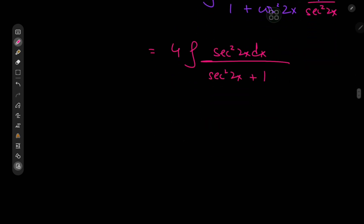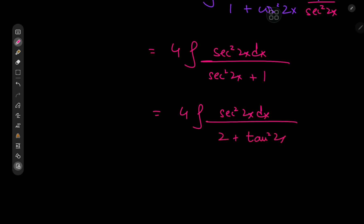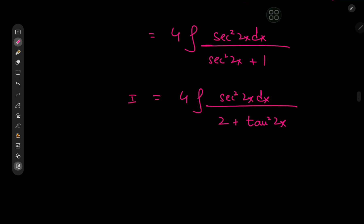Now we expand sec²(2x) as 1 plus tan²(2x), giving four times the integral of sec²(2x) dx divided by 2 plus tan²(2x).